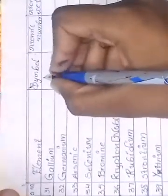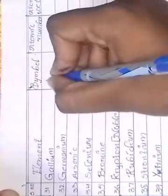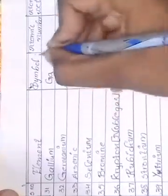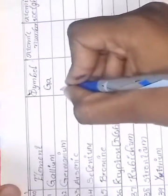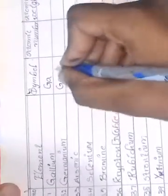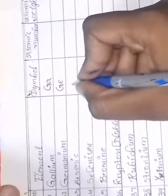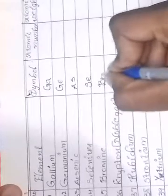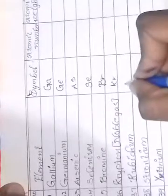31st element gallium, its symbol is Ga. 32nd element is germanium, its symbol is Ge. 33rd element is arsenic, symbol is As. Selenium symbol is Se. Bromine symbol is Br. Krypton symbol is Kr. Rubidium symbol is Rb.